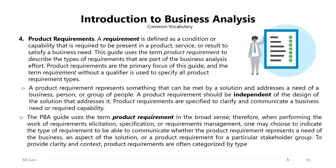The PMI PBA guide uses the term product requirement in the broad sense. Therefore, when performing requirements elicitation, specification, or requirements management, one may choose to indicate the type of requirement to communicate whether it represents a need of the business, an aspect of the solution, or a requirement for a particular stakeholder group. To provide clarity and context, product requirements are often categorized by type, and there are four types.